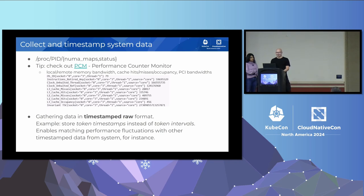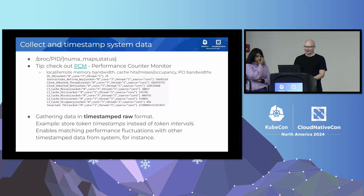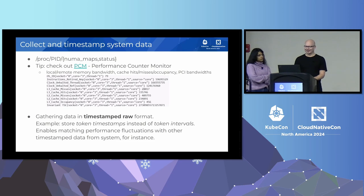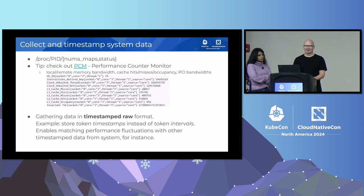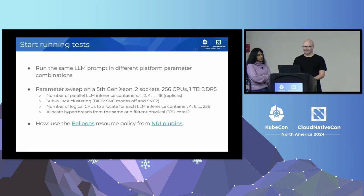All this data that we are collecting from the system, and the instrumented timestamps from the transformer libraries, we store in raw format so that we can then post-process and count the token intervals from there. The reason we are not storing token intervals right away is that if we can find some performance fluctuations during the benchmark, then we can match using these timestamps to the system data so that we can find what could be causing performance degradation.